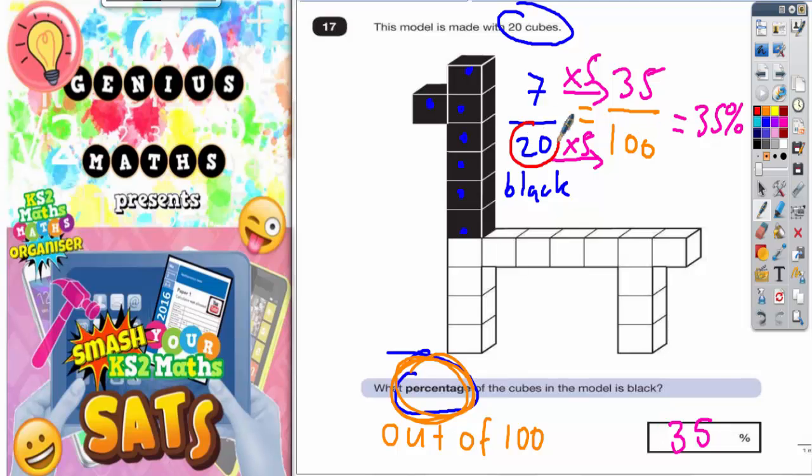Just to recap, the main points: there are 20 cubes altogether, and 7 of them are black. That's where 7 out of 20 comes from. Turn it into something out of 100 to get a percentage, so you need to make both numbers 5 times bigger. If you make both numbers 5 times bigger, you get 35 out of 100. Therefore, the black cubes is 35%.